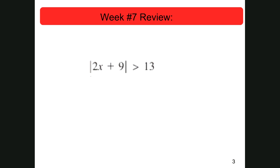When I have an absolute value, I'm going to rewrite it as probably one single problem, but remember it has to be the same, or you have to have positive and negative, and then I'm just going to solve — so I'm going to subtract 9, but I'm going to subtract it from both sides.